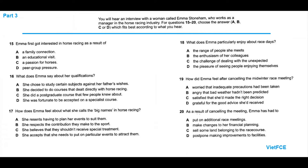That's the end of part two. Now turn to part three. You'll hear an interview with a woman called Emma Stonham who works as a manager in the horse racing industry. For questions 15 to 20, choose the answer A, B, C or D which fits best according to what you hear. In the exam, you have one minute to look at part three.